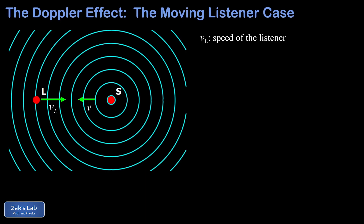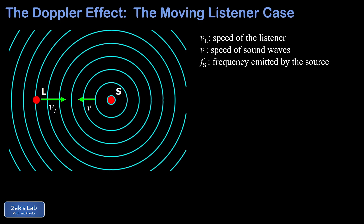First we look at the moving listener case. In the diagram, VL is the speed of the listener, V is simply the speed of sound, FS is the frequency emitted by the source, and FL is the frequency of sound heard by the listener. If our listener is headed toward the source, we expect a higher frequency than the source frequency. What we want to find is the rate at which the listener runs into wave crests in hertz — that's the detected frequency for the listener.